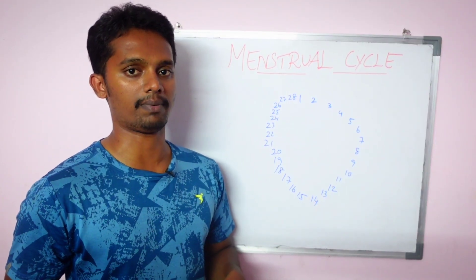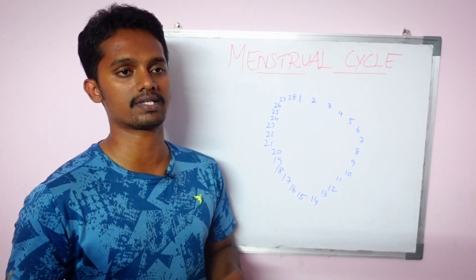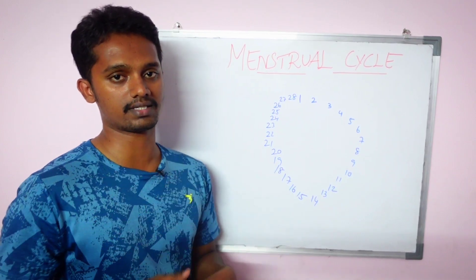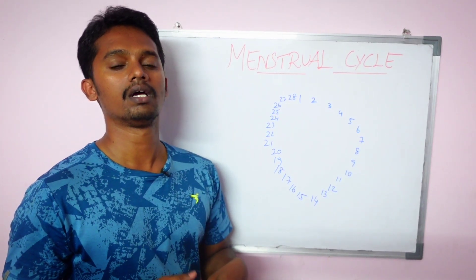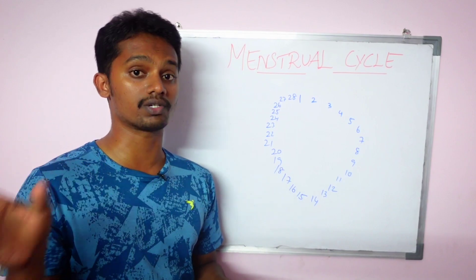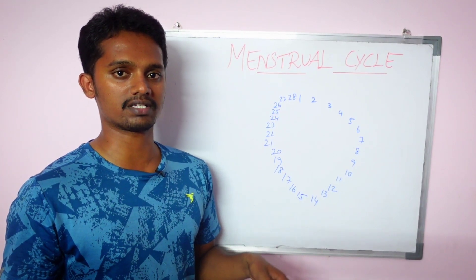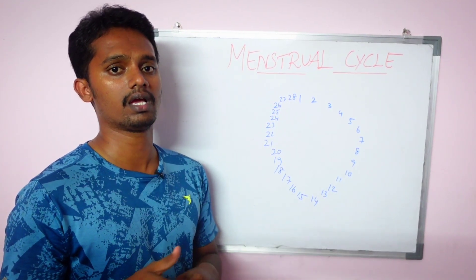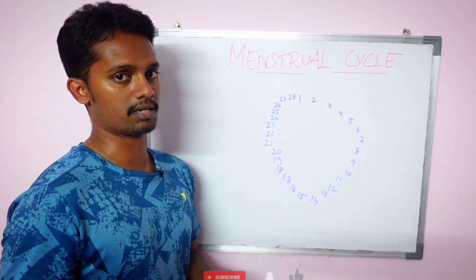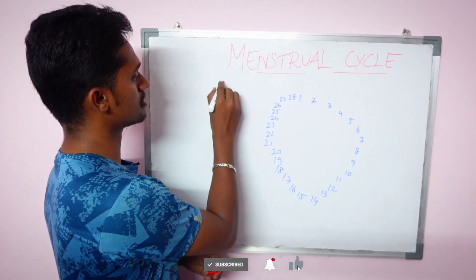Let's check the menstrual cycle. These are the stages of the menstrual cycle. There are four stages in the menstrual cycle.